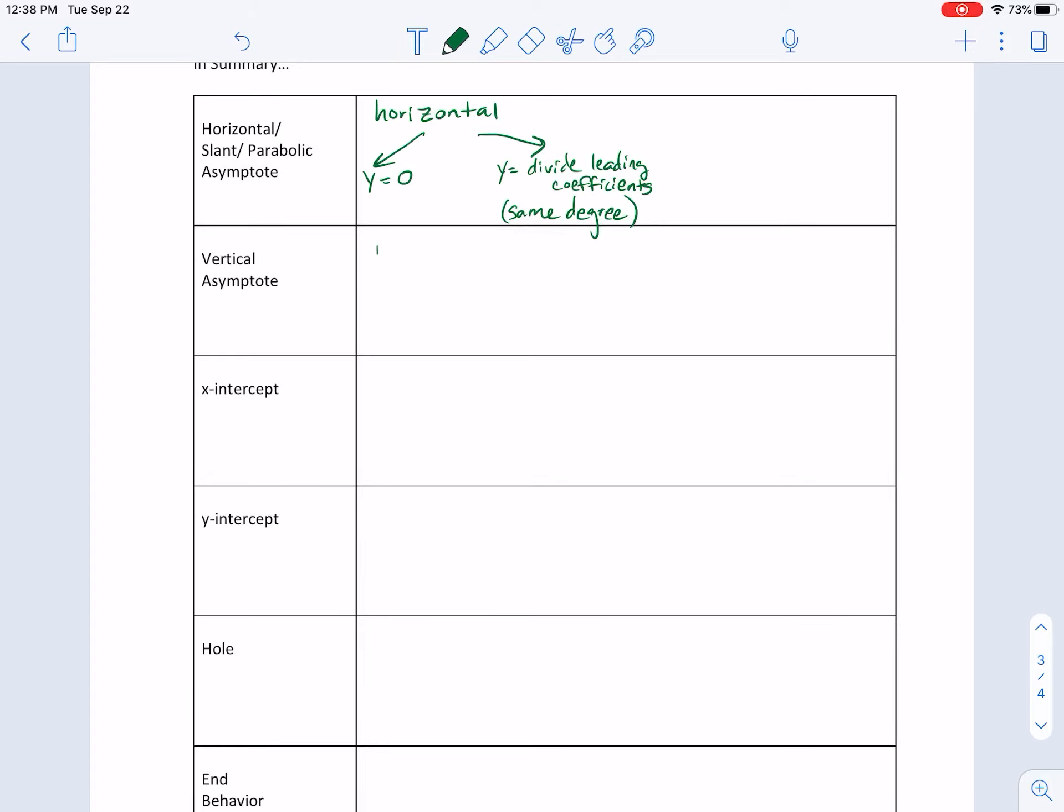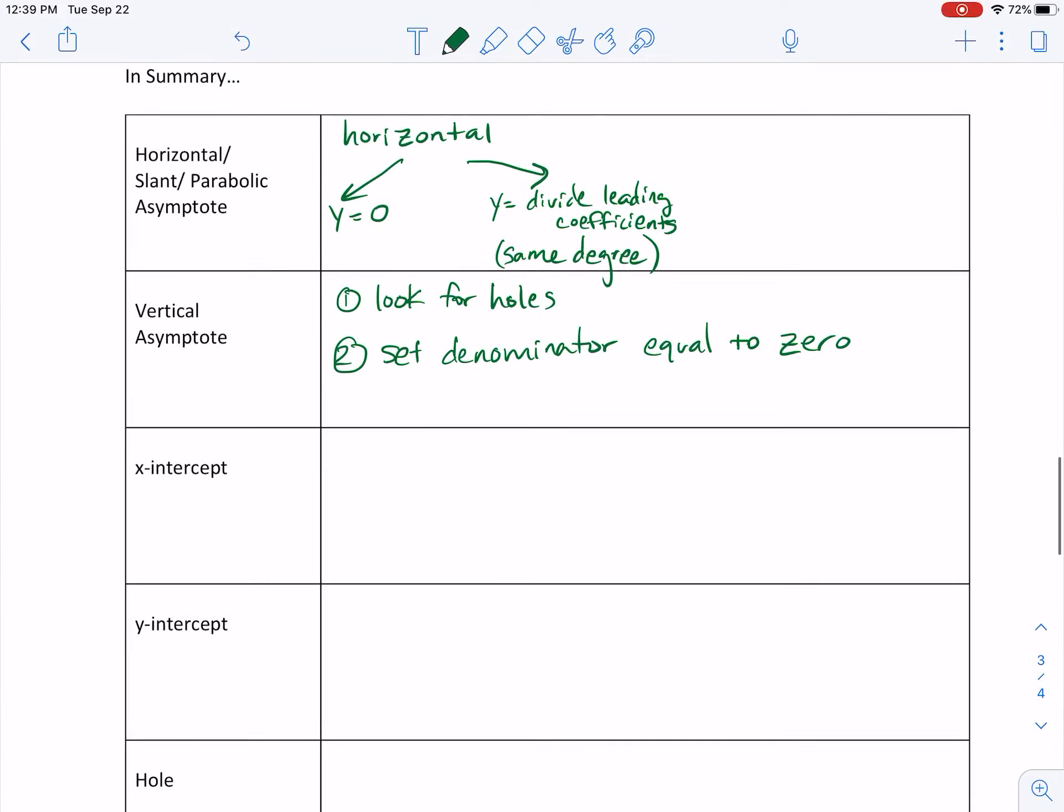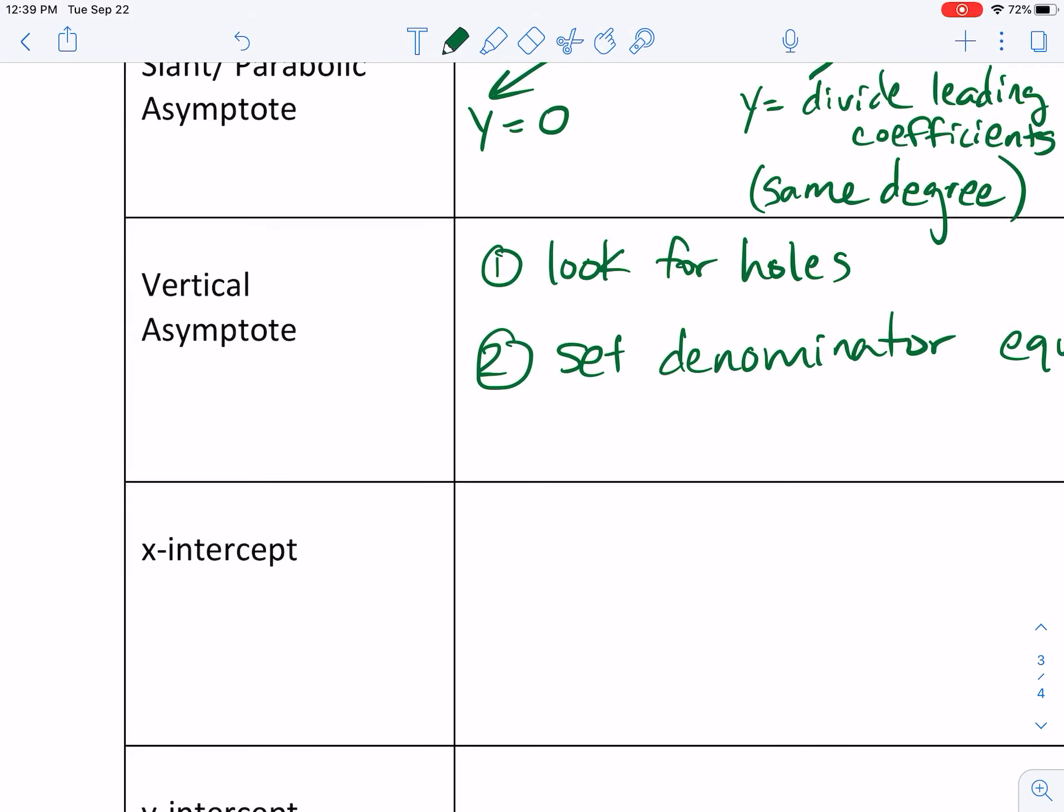But that became my vertical asymptote, and so what we'll say down here is when we look at our vertical asymptote, this is when, so I'm going to say step one, look for holes, and then step two is set the denominator equal to zero, and those would be, and you can have multiple vertical asymptotes. So the only time when we look for holes, we could have something, basically a hole happens when I have like an x minus 1 on the top that cancels with an x minus 1 on the bottom.